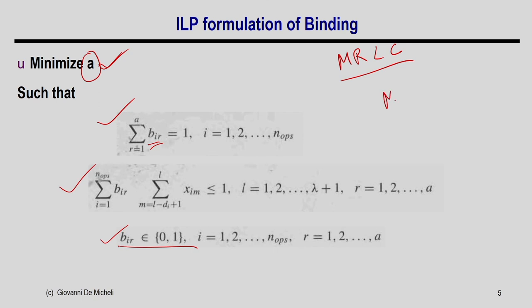For MLRC where the resource count is known, A is a constraint rather than an unknown, so no minimize objective is needed. Just provide the constraints and ask the ILP solver for values that satisfy them. The solver then gives only the binding — the mapping of each operation to the available resources.